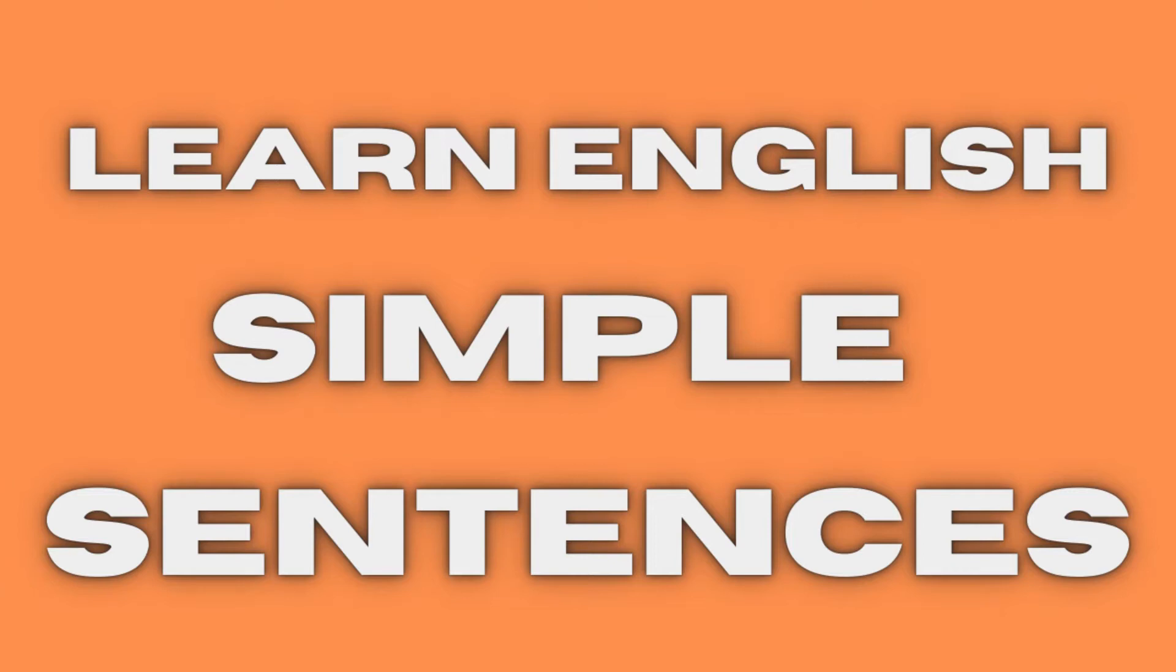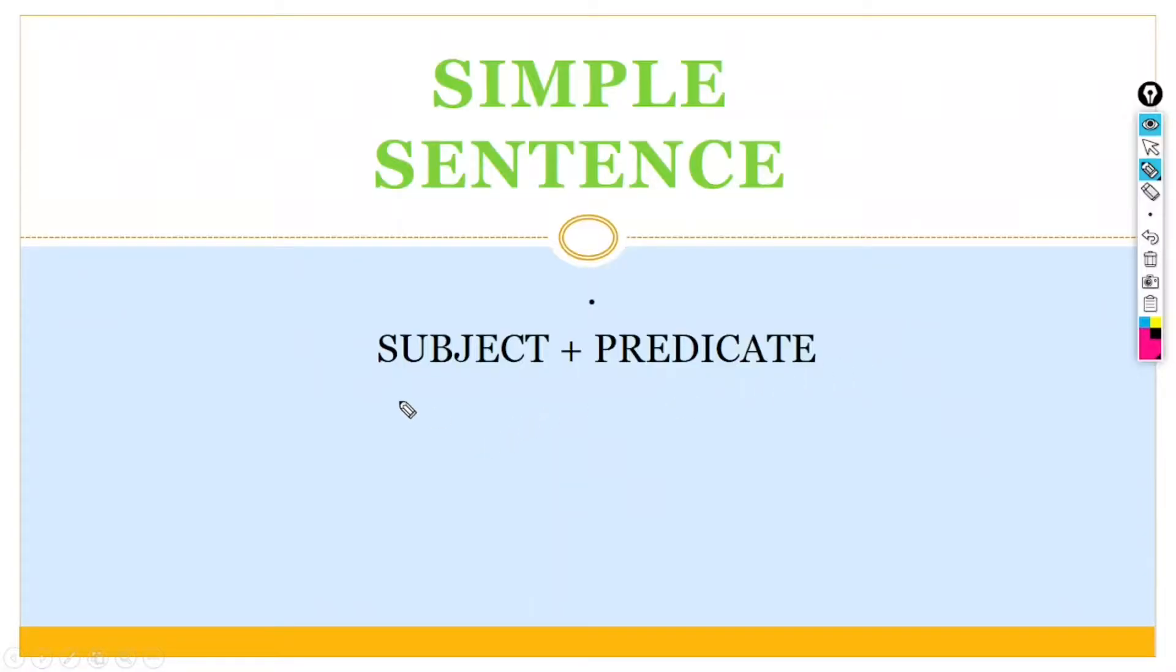Overall, a simple sentence is exactly what it sounds like - simple. Simple sentence has a subject and predicate. So, first is a subject plus predicate. Now, I explain.